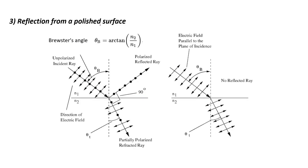The third and final method is reflection from a polished surface. A polished surface is a plane and smooth surface. If a light is incident on a surface, it is reflected and refracted — both phenomena are operating simultaneously. If an unpolarized light is incident on this polished surface at a particular angle, which is the Brewster's angle — Brewster was the scientist to observe this phenomenon — at this particular angle, the reflected ray and the refracted ray make an angle of 90 degrees.